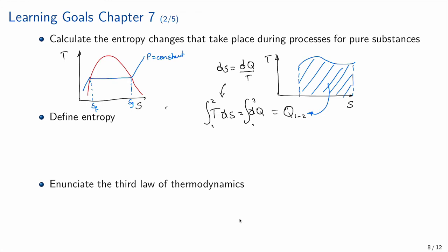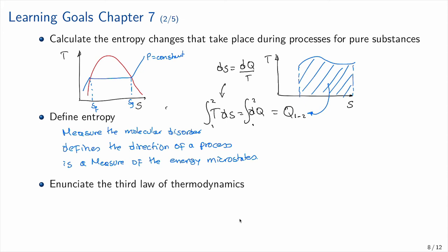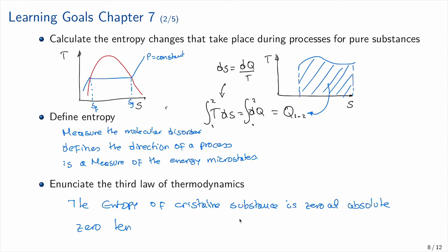Entropy measures molecular disorder. It defines the direction of a process and is a measure of the microstates of energy. The third law of thermodynamics states that the entropy of a pure crystalline substance is zero at absolute zero temperature.